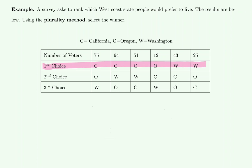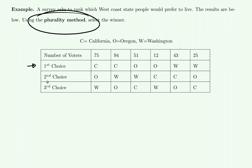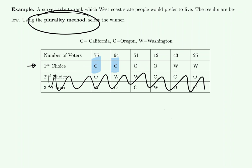This example is about a survey that asked people to rank which of the west coast states they would prefer to live in. The results are in the table. Using the plurality method — considering just who got the most votes — we select the winner based on first choices only. California is C, Oregon is O, and Washington is W. Different voter categories voted for California first; though their second and third place choices differed, they agree California is first. To tabulate California votes, we add 75 plus 94.